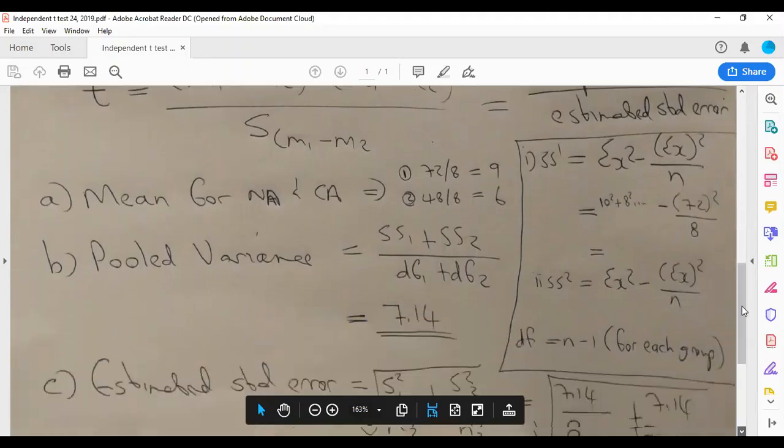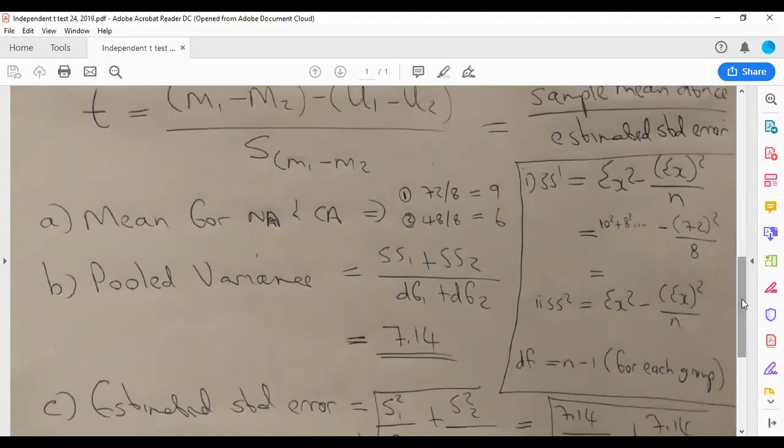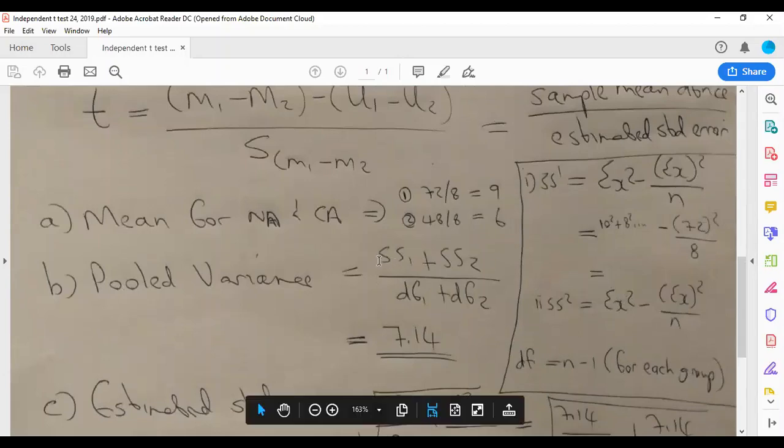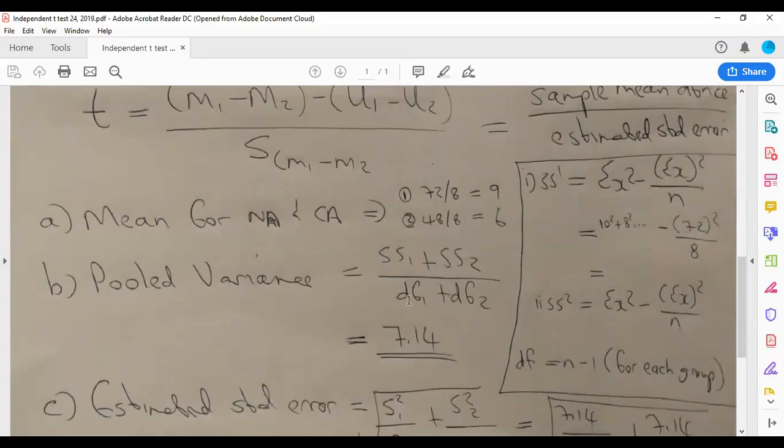For the second group, you do the same. And then when you add those two—for the first one here and for the second one—at the bottom, the degrees of freedom for each group means n minus 1.